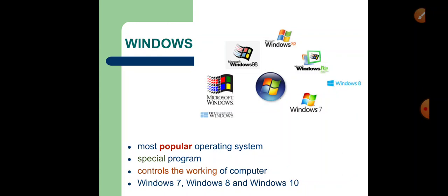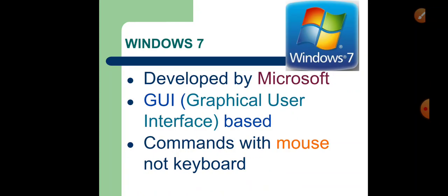As you all know, to start and work every computer needs an operating system software like Windows, Mac operating system, Linux, etc. Windows is the most popular operating system used nowadays. It is a special program that controls the working of a computer. There are different versions of Windows like Windows 98, XP, Vista, Windows 7, Windows 8, and Windows 10, etc.